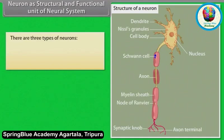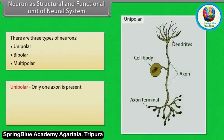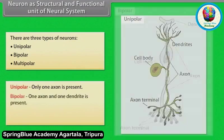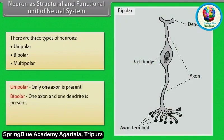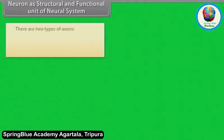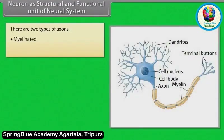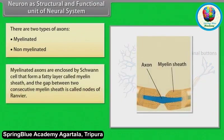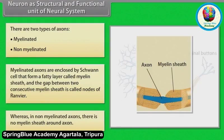A long fiber that transmits impulses away from the cell body is called an axon. Each axon ends as a bulb-like structure called a synaptic knob, which possesses neurotransmitters. There are three types of neurons: unipolar — only one axon is present; bipolar — one axon and one dendrite are present; and multipolar — one axon and two or more dendrites are present. There are two types of axons: myelinated and non-myelinated. Myelinated axons are enclosed by Schwann cells that form a fatty layer called the myelin sheath, and the gap between two consecutive myelin sheaths is called nodes of Ranvier. In non-myelinated axons, there is no myelin sheath around the axon.